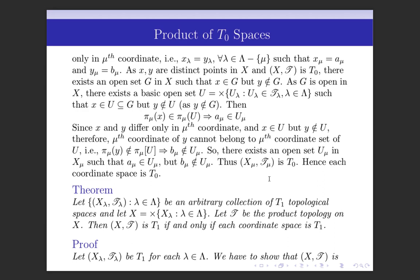Now we shall prove the theorem for T1 spaces. Let {Xλ, Tλ}, λ∈Λ, be an arbitrary collection of T1 topological spaces, let X be the Cartesian product, and T the product topology. Then (X,T) is T1 if and only if each coordinate space is T1.